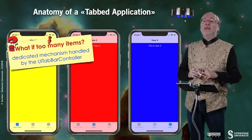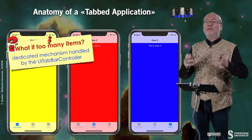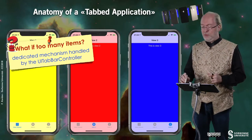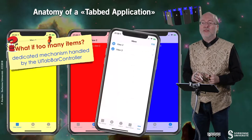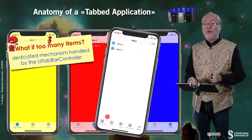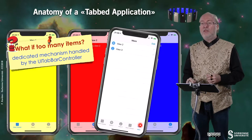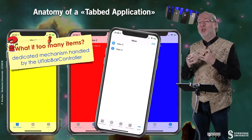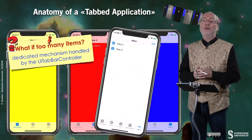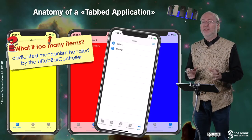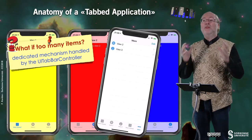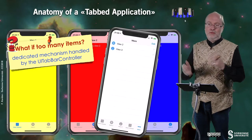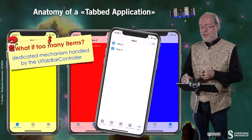If there are too many items, there is a dedicated mechanism handled directly by the UITabBarController. If you have more than four tabbar items, tapping the extra slot will show them appearing as a list. This is totally handled for you. And if you are running on a large device, you may have more elements displayed.